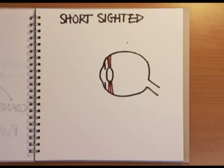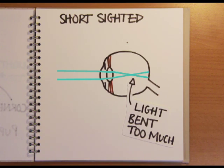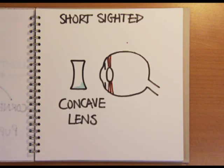In short sighted people the cornea and the lens bend the light too much focusing it in front of the retina creating a blurred image. Concave glasses lenses are used to correct short sightedness as they diverge the incoming light making it focus further back in the eye correctly on the retina.